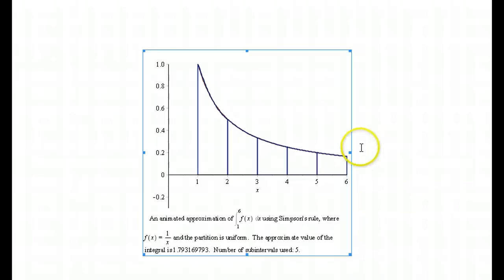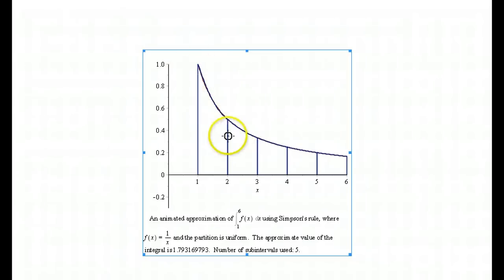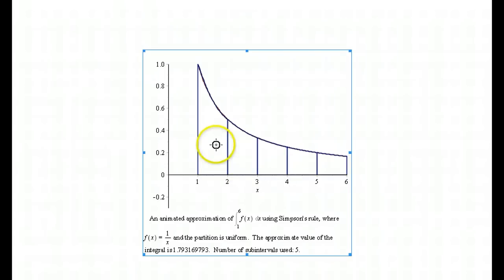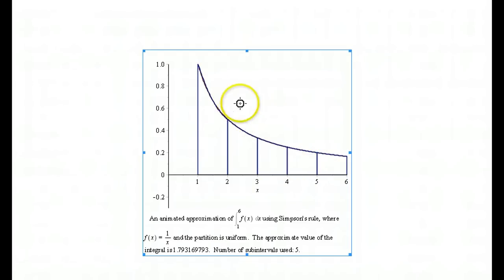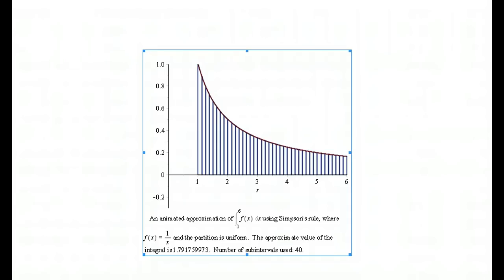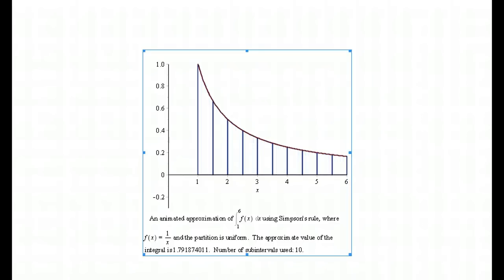If you want an even better approximation, instead of using line segments over each fixed subinterval, you can use parabolic arcs. We split the interval into however many subintervals we want and approximate the given function by a parabola over each subinterval. The picture shows this is done so well you can barely tell the difference between the actual function and the parabola. Increasing the number of subintervals makes the area approximation very good, very fast with Simpson's rule.